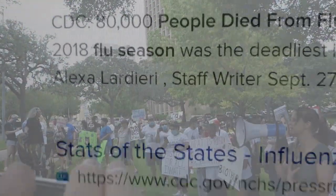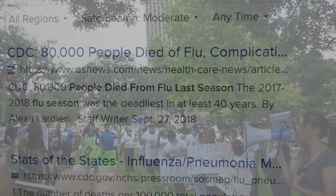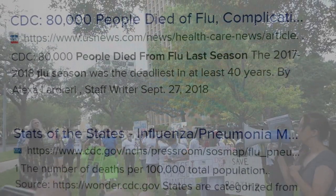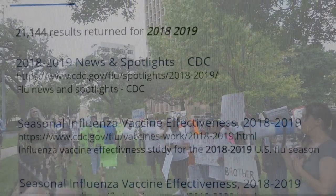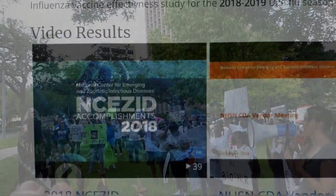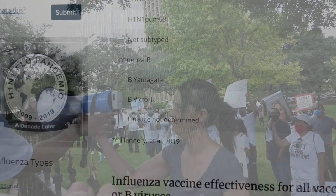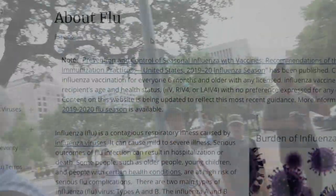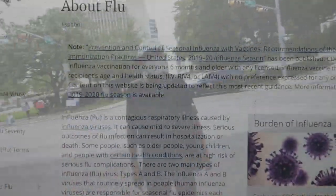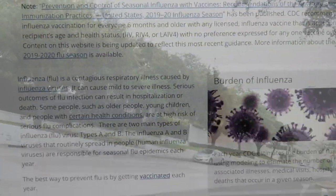Let us look at how many people died from the flu last season. The year 2017 to 2018 was the deadliest in 40 years — 80,000 people in the U.S. died of the flu and complications of the flu. For 2018 to 2019, I think it was around 40,000, but I'm not exactly sure. It seems to me a lot more people are getting the flu after they've had the vaccine, so I think stay away from that stuff.